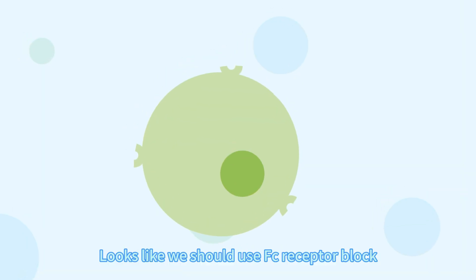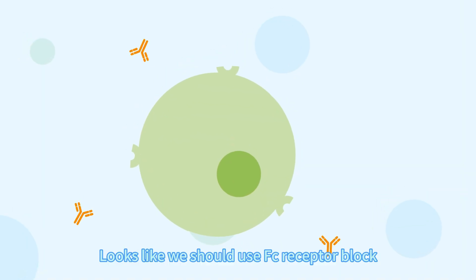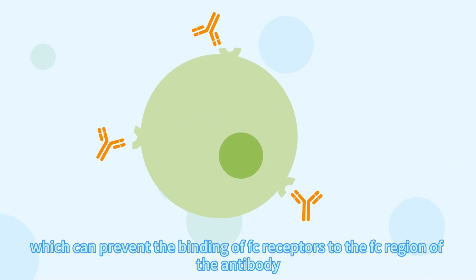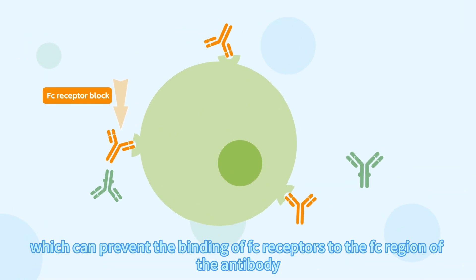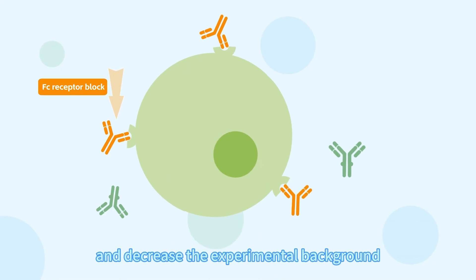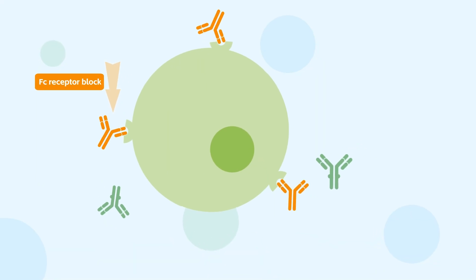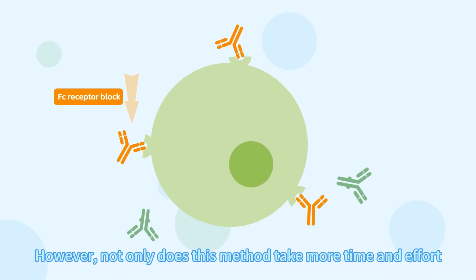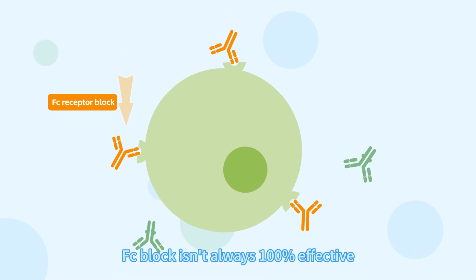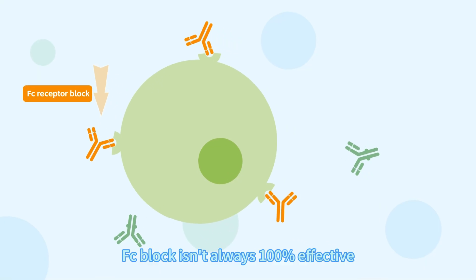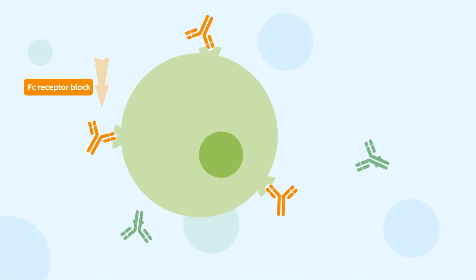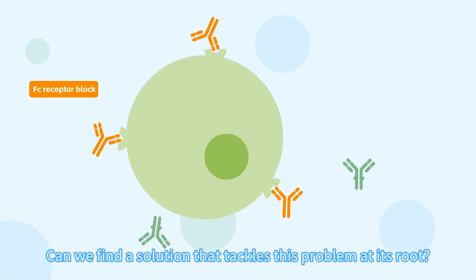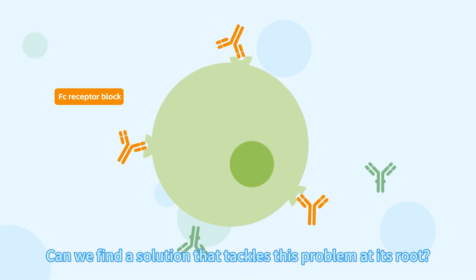Looks like we should use FC receptor block, which can prevent the binding of FC receptors to the FC region of the antibody and decrease the experimental background. However, not only does this method take more time and effort, FC block isn't always 100% effective. Can we find a solution that tackles this problem at its root?